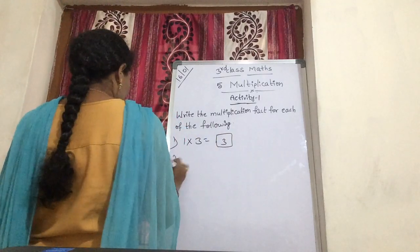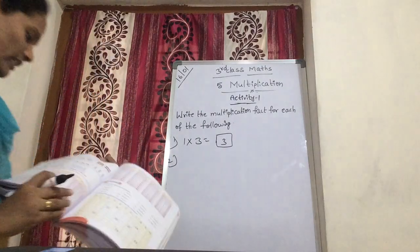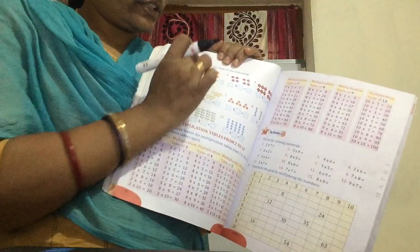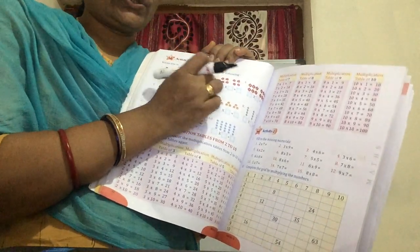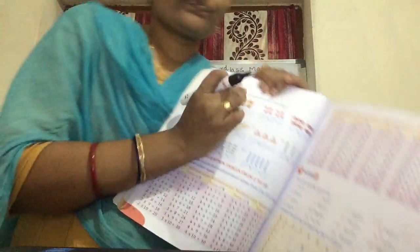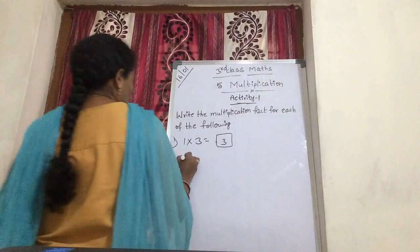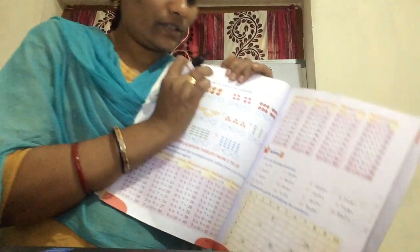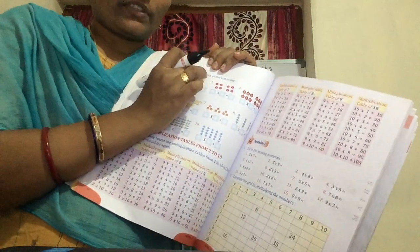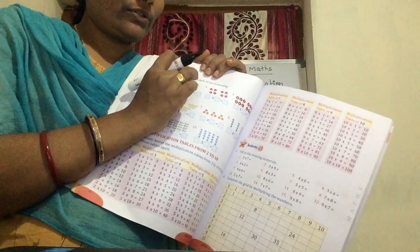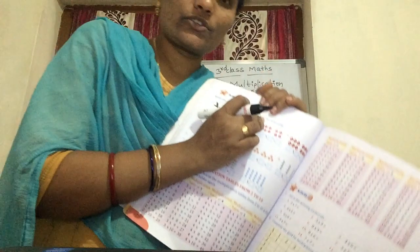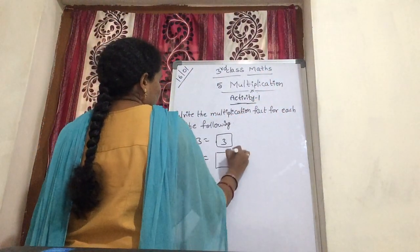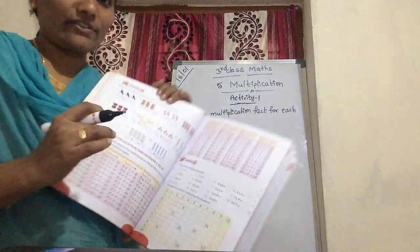Now, second one. Here, marigold flowers are there. How many rows are there? 1, 2 — two rows. So, 2 into... Each row, how many marigold flowers? 1, 2, 3 — each row has 3 flowers. So, 2 into 3. You are getting 6 flowers.